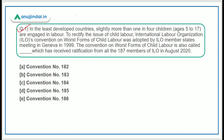In the least developed countries, slightly more than 1 in 4 children are engaged in labour. To rectify the issue of child labour, the ILO Convention on the Worst Forms of Child Labour was adopted by ILO member states meeting in Geneva in 1999. The question is: the Convention on Worst Forms of Child Labour is also called what? It has received ratification from all member nations of ILO in the month of August 2020.